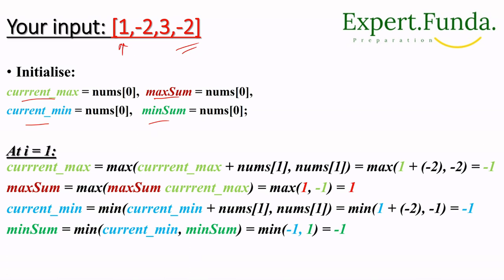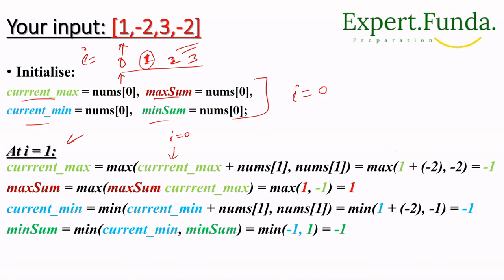We'll loop starting from i equal to 1 through to index 3. We've already initialized with index 0. Now for i=1, we find current_max: our previous current_max is 1 (index 0). We now take num[1] which is -2.